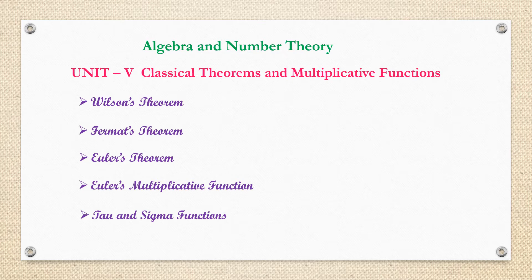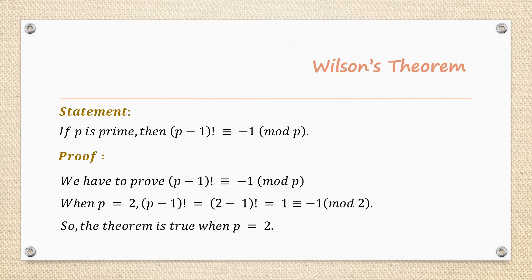First: Wilson's theorem. The statement is: if P is prime, then (P-1)! is congruent to -1 mod P. Here P must be a prime number — a number whose only divisors are 1 and itself. The result is (P-1)! ≡ -1 (mod P). After completing this theorem, we will use it for solving factorial problems.